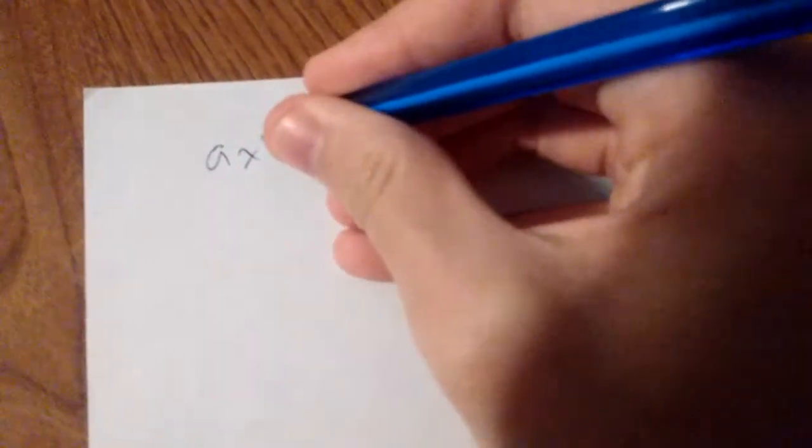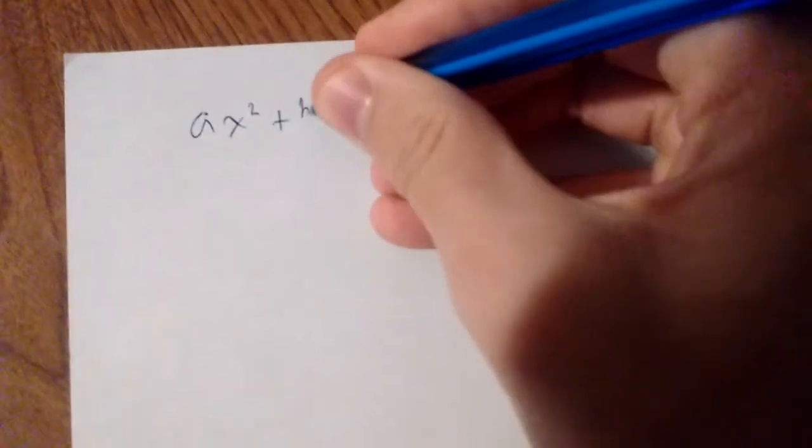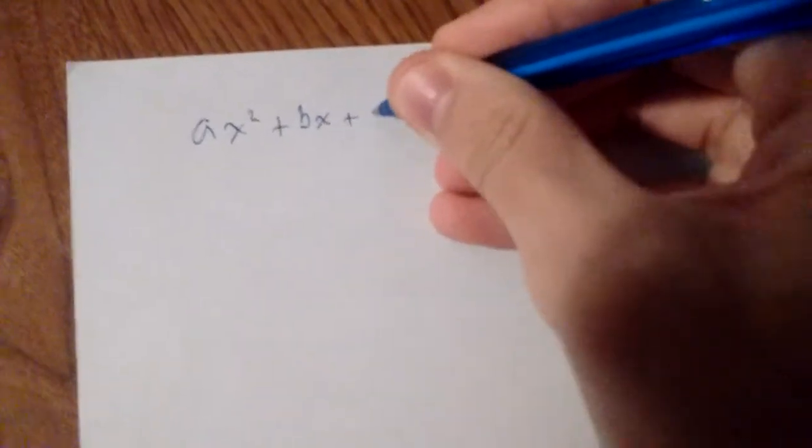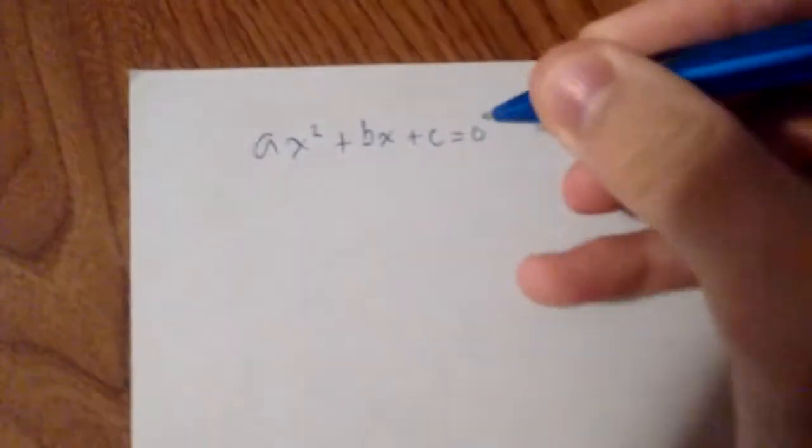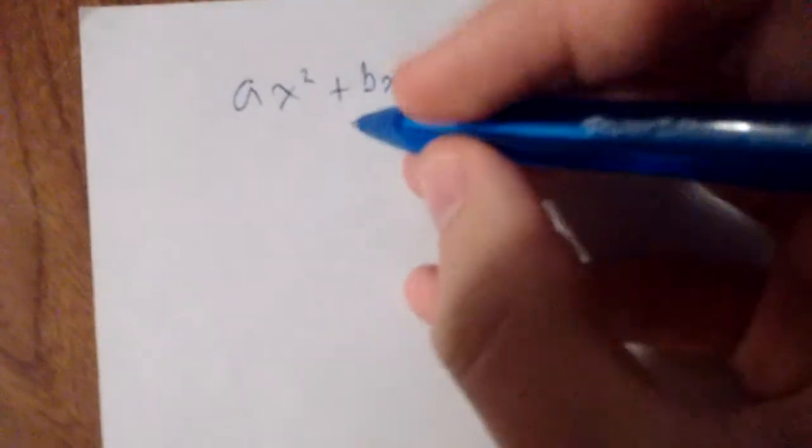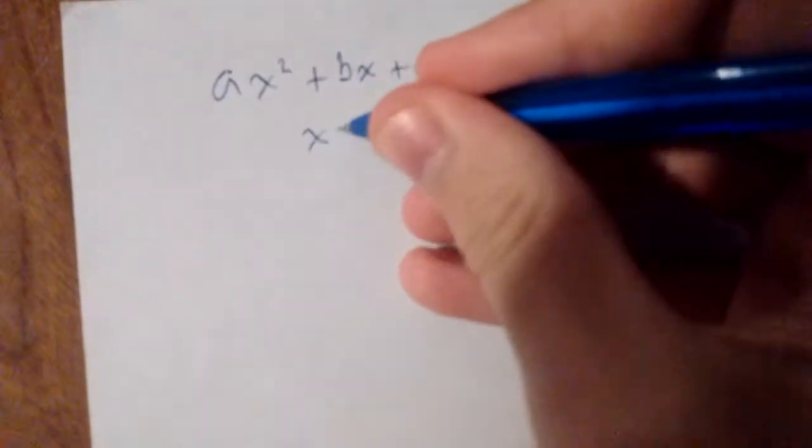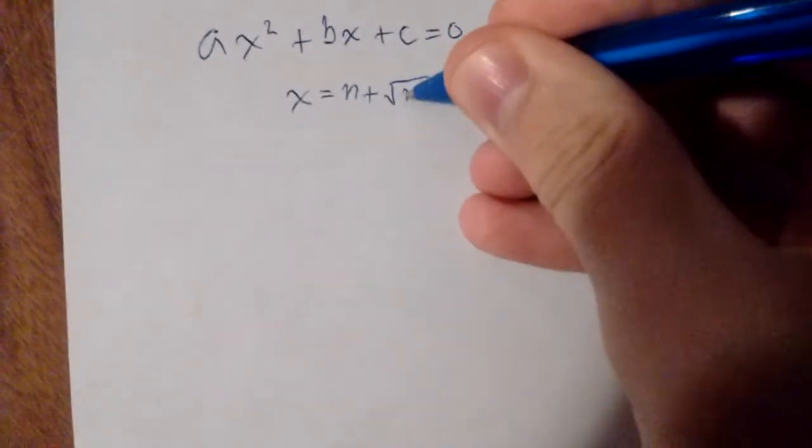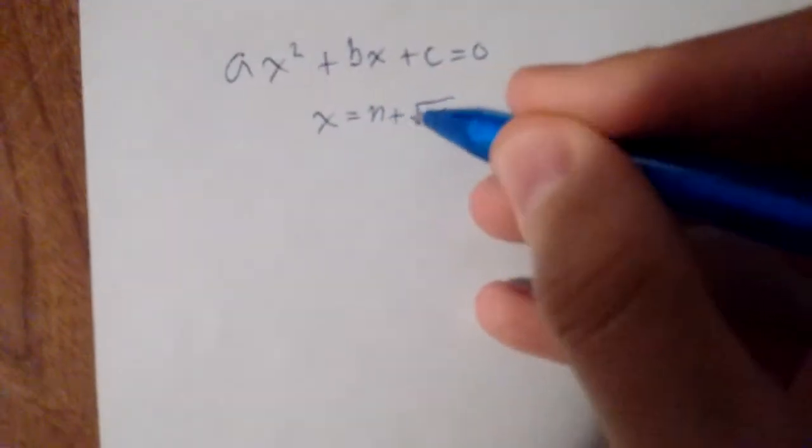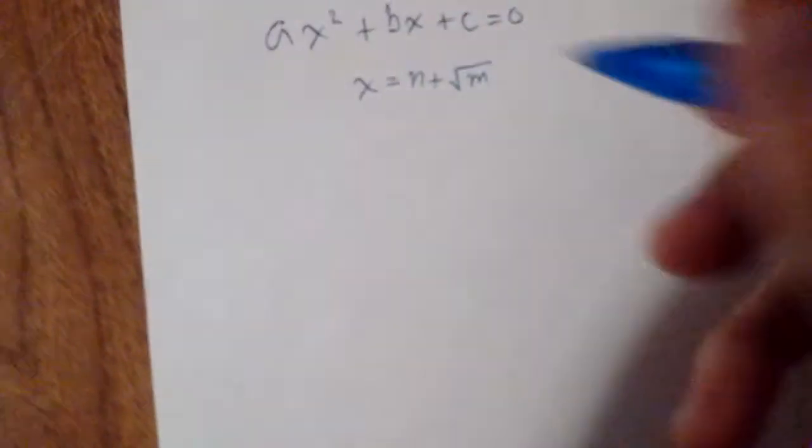Here's a quadratic equation: ax squared plus bx plus c equals 0. For absolutely no reason, I'm going to assume the solution is of the form x equals n plus square root of m. The negative root works similarly, and I'm lazy so I'm not going to do it.